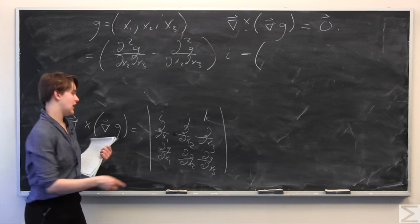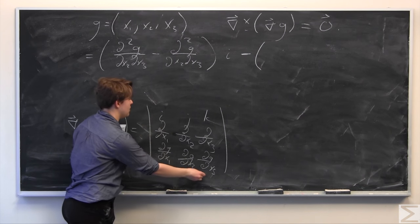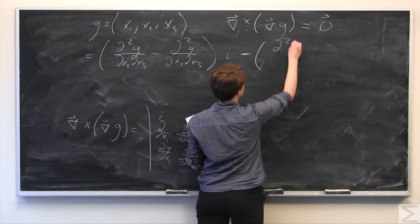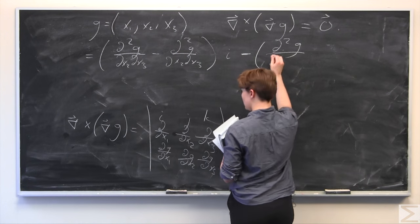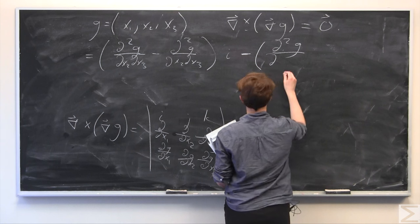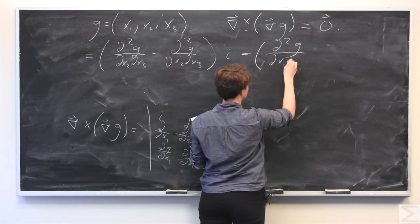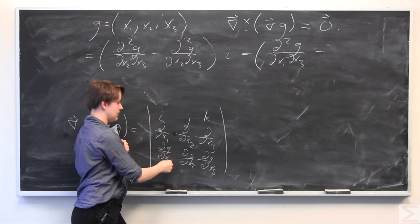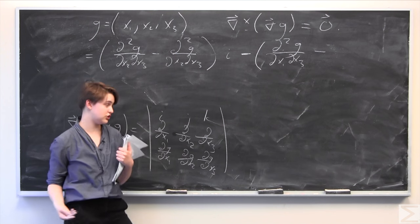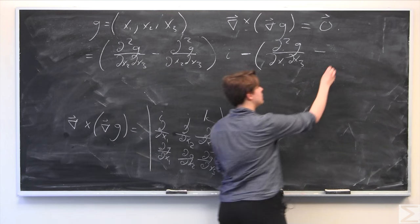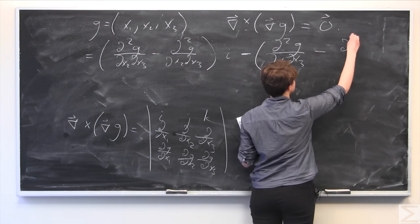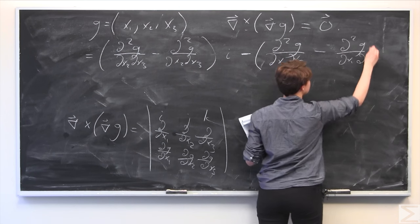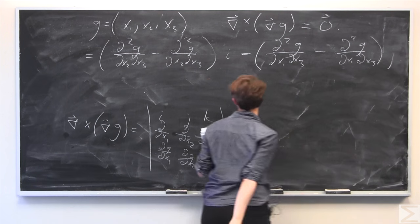For the j component, we have ∂²g/∂x1∂x3 minus ∂²g/∂x1∂x3, times the j component. You can see where this is going.